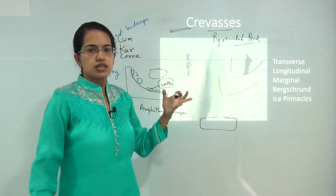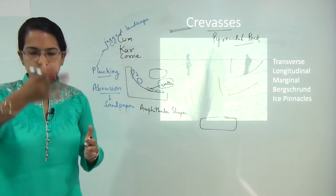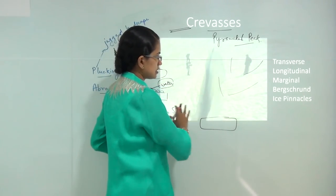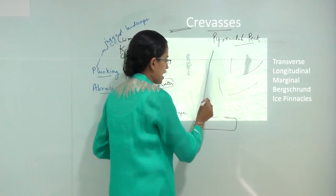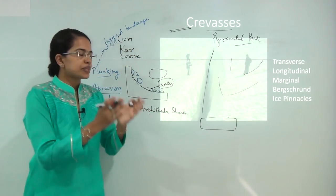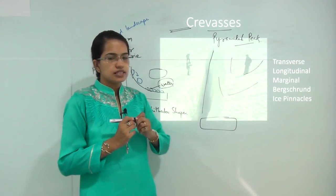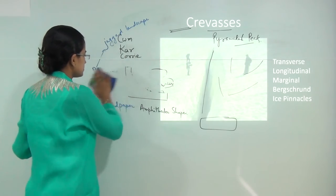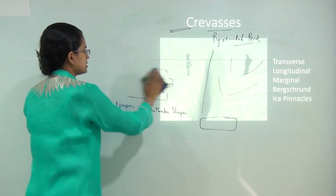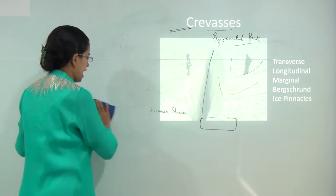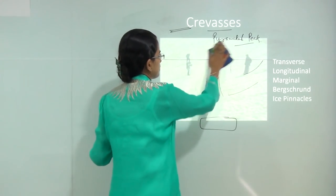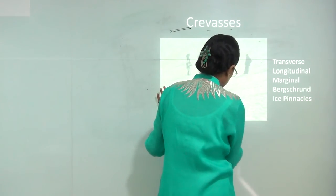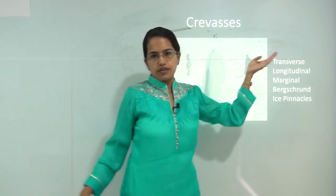Crevasses are fractures within the glacier. You can see the glacier land mass and fractures being created within it — these are known as crevasses. Crevasses are a common reason for most of the erosional landforms you can see. Crevasses can be classified into different types; today we will discuss five major types.